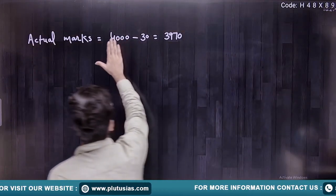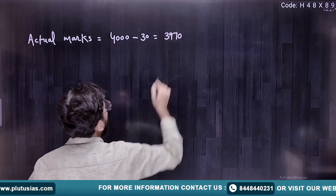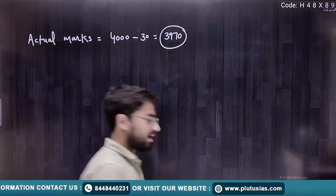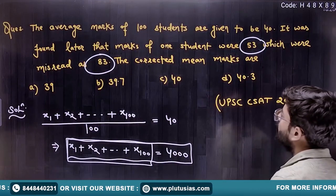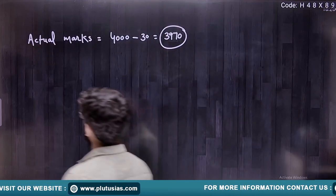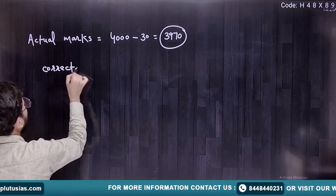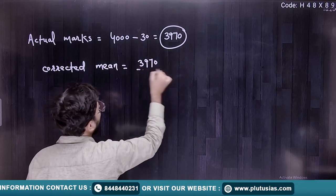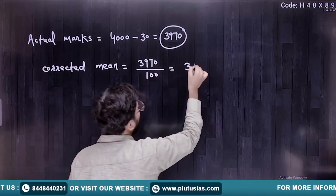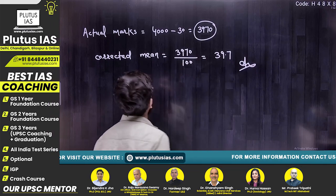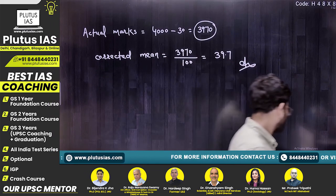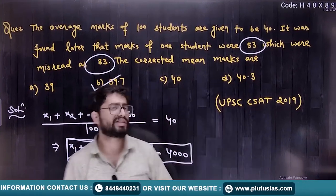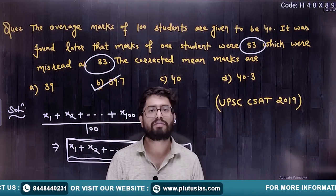So the actual total marks are 4000 minus 30, which equals 3970. The corrected mean is actual marks divided by total number of students — 3970 divided by 100 — that is 39.7. So 39.7, option B, is the correct answer. These are questions from your PYQ on the average chapter.